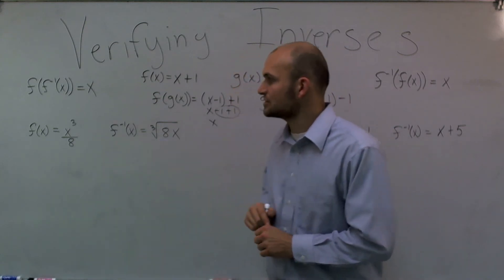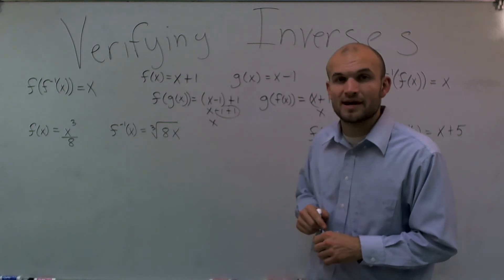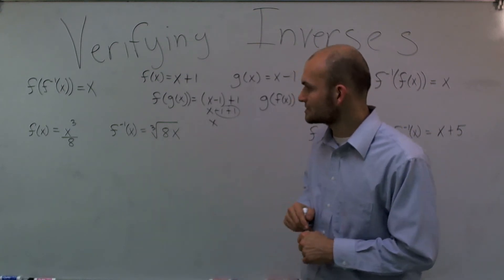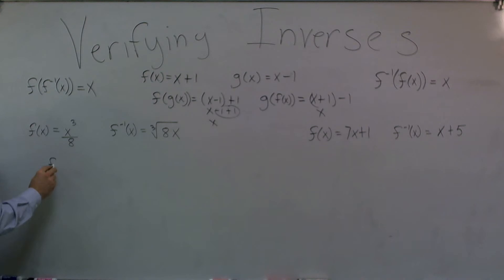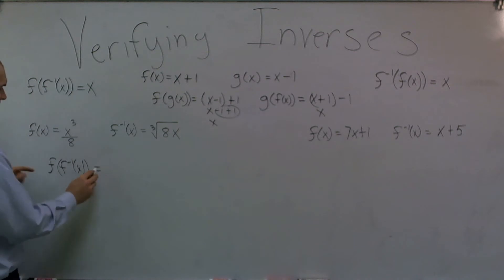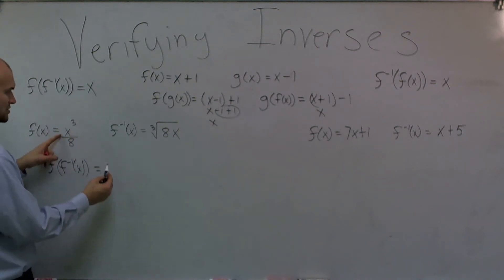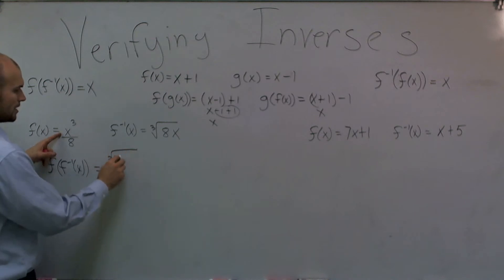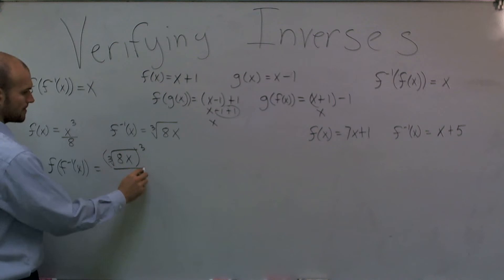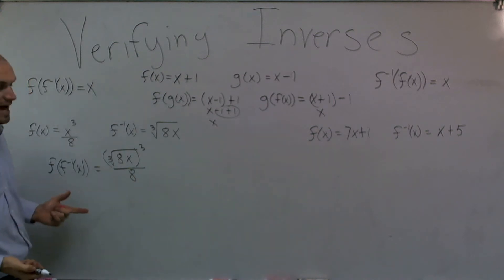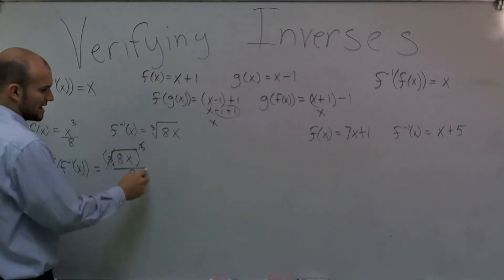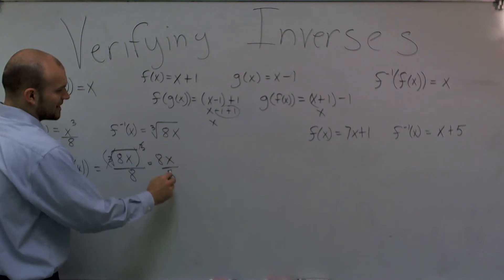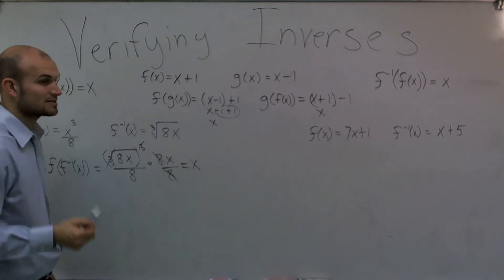Let's do the composition of our first pair: f(x) = x³/8 and f⁻¹(x) = ∛(8x). I'll plug f⁻¹(x) into f(x), giving me the cube root of (8x) all cubed, divided by 8. The cube root and the cube cancel out, leaving 8x/8. Those cancel, and I'm left with x.